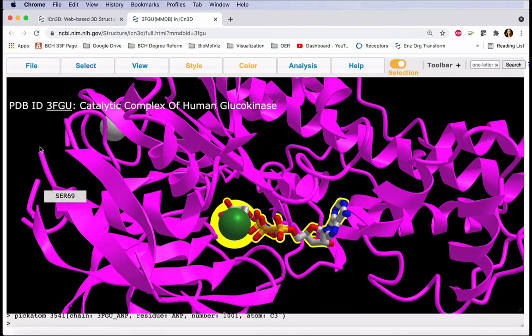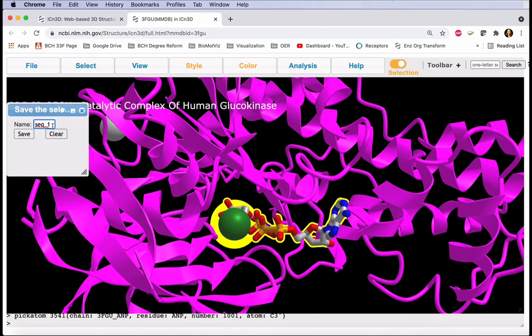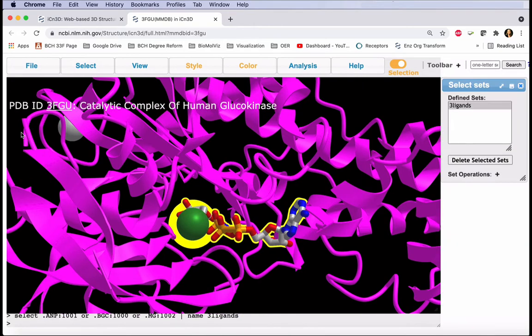To save this selection, select Save Selection, and type a name. I'll call this Three Ligands. The Select Sets menu comes up, and here's our defined set.